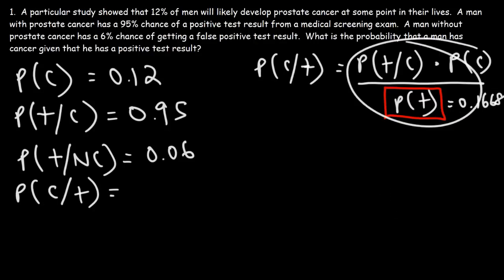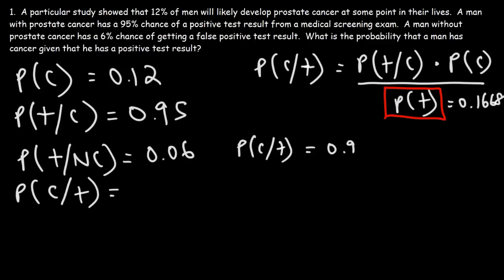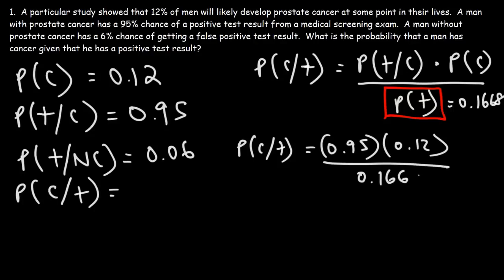Now let's plug in the numbers into the formula. The probability of a positive test given the person has cancer is 0.95. The probability the person has prostate cancer is 0.12. The probability that a man will have a positive test result is 0.1668. So it's 0.95 times 0.12 divided by 0.1668, and you should get 0.68345.